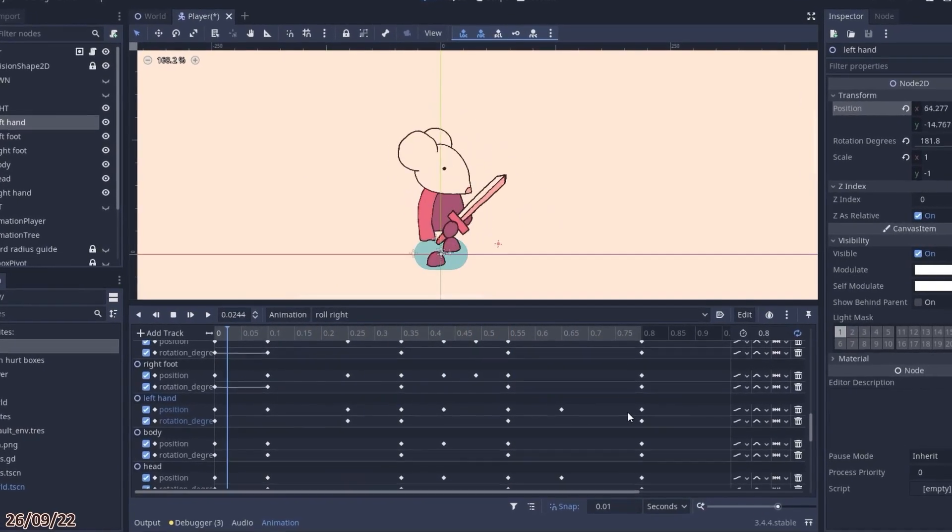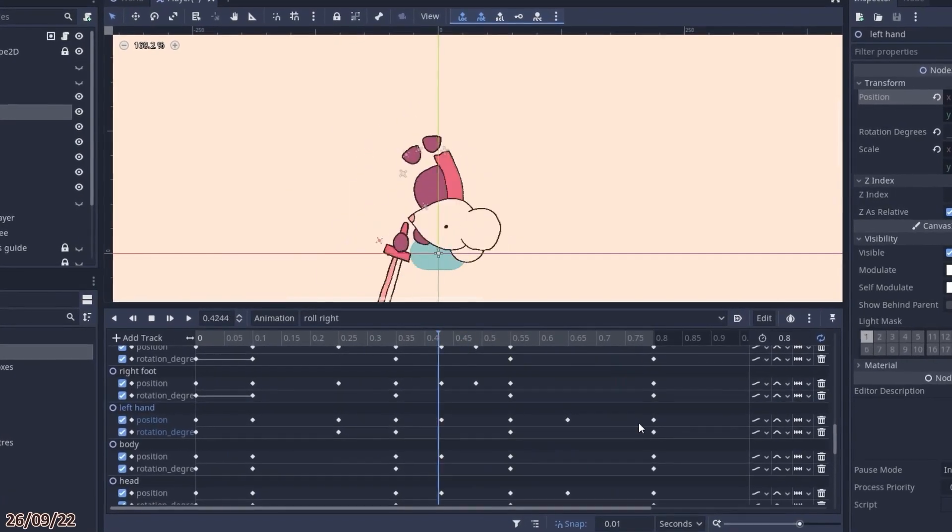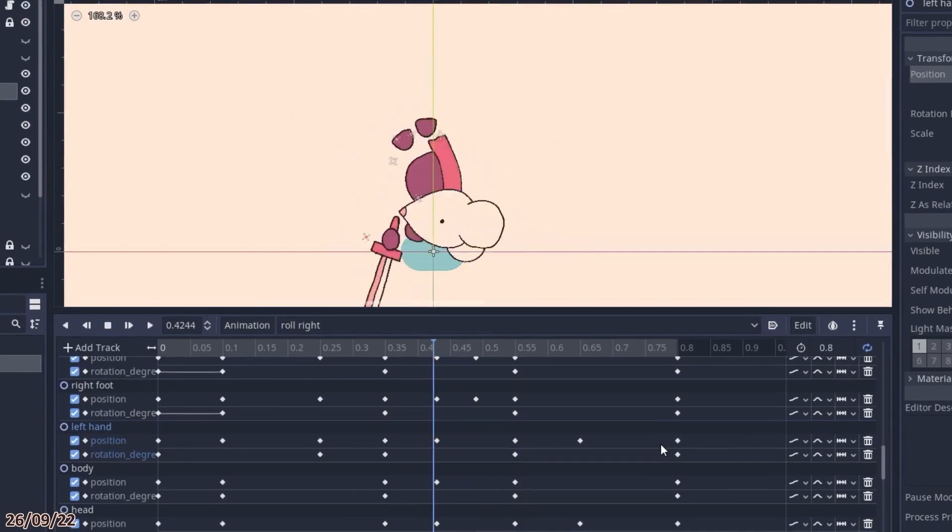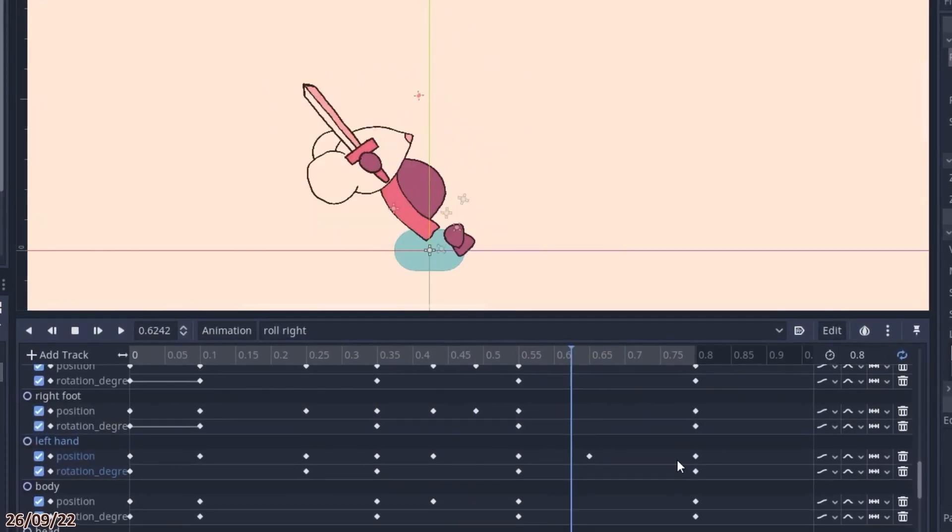Before working on the other three directions, I wanted to implement the rolling mechanic in game, so I could make sure the timings of my animation looked good, before continuing to another three directions.